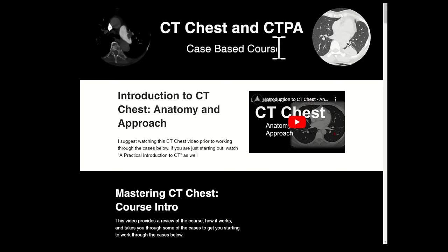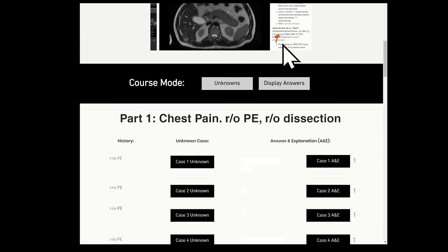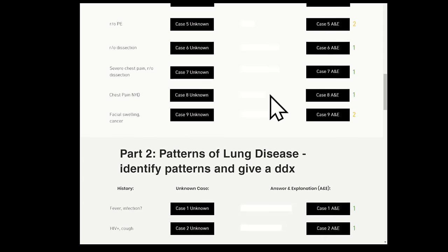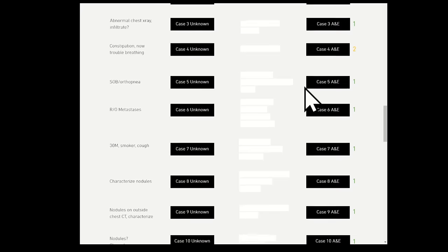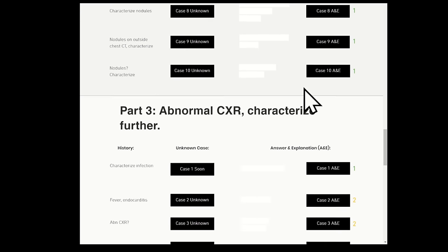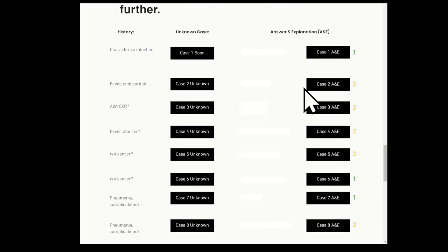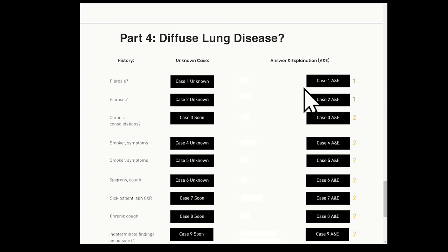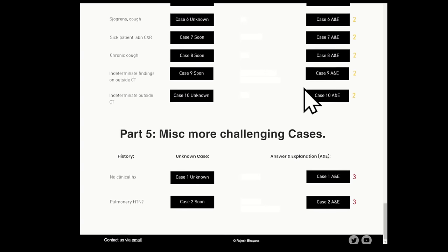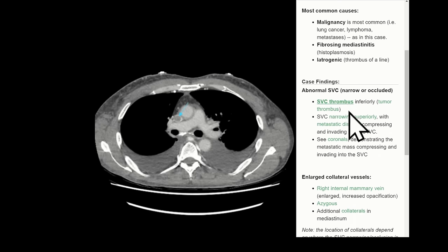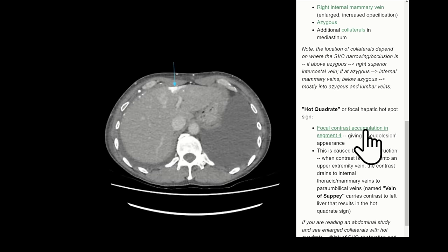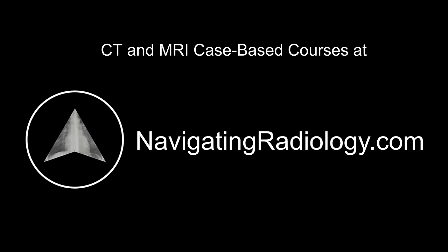On our website we have a case-based course covering vascular emergencies like PE, dissection, and SVC syndrome; all patterns of lung disease like airspace disease, septal thickening, and nodular patterns with associated differentials; infections and masses; and diffuse lung diseases including interstitial lung diseases. The course includes over 30 full DICOM cases with walkthroughs of imaging findings. This and our other case-based courses are available at navigatingradiology.com.